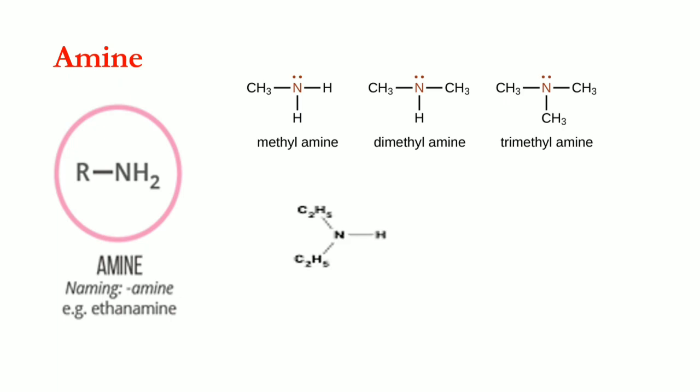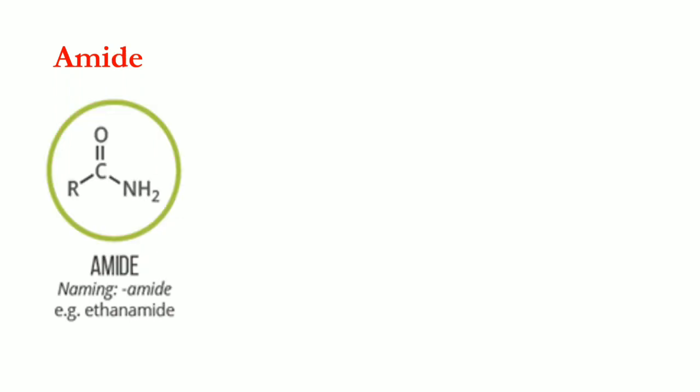This structure has two ethyl groups attached to the amine group with one hydrogen remaining, so we call this diethylamine. The other example has a one-two-three-four carbon chain with the amine group at the right terminal, giving us a four-carbon chain: butylamine.